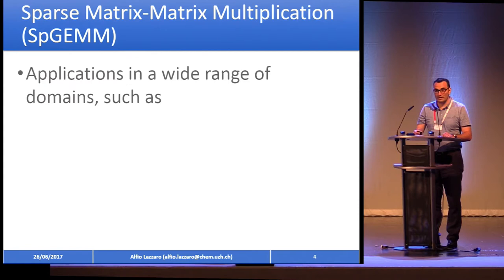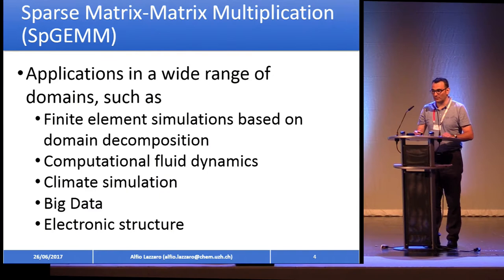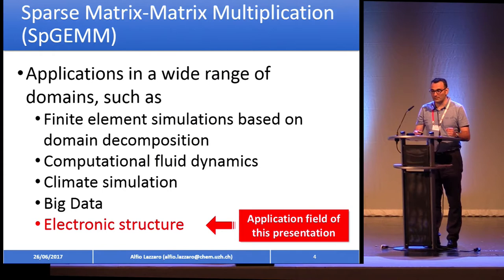Let's start with the description of sparse matrix multiplication. This is used in several domains: finite elements simulation, computational fluid dynamics, climate simulation, big data, and electronic structure. Electronic structure is the topic of this presentation.